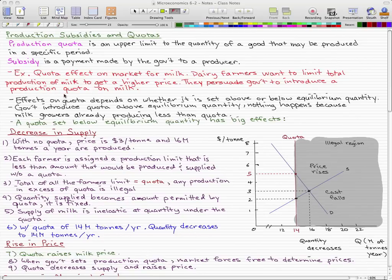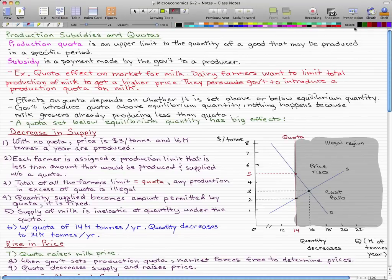The effects of the quota depend on whether it is set above or below the equilibrium quantity. If the government introduces a quota above the equilibrium quantity, then nothing happens because the milk growers are already producing less than the quota.